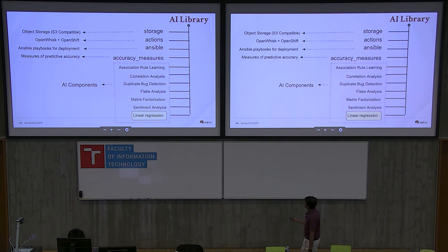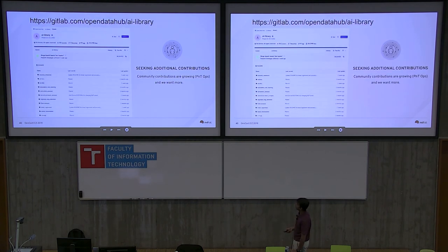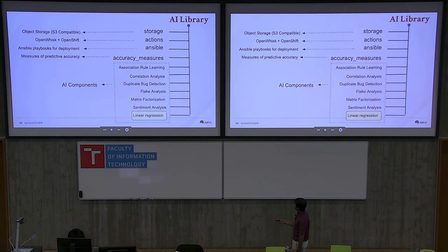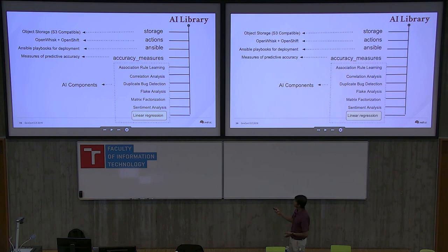If you want to learn more about all the other algorithms in AI Library, you can go to opendatahub.io and find all the documentation there. Note also that Mark mentioned you could define a set of rules to find out if one input column could dictate an output column. You could use association rule learning, but that's for a well-defined set of associations. For things that are too randomized, you need a more machine learning-based process.